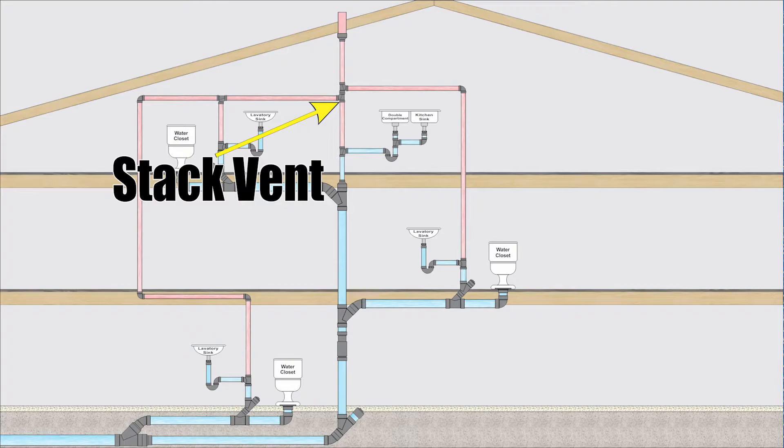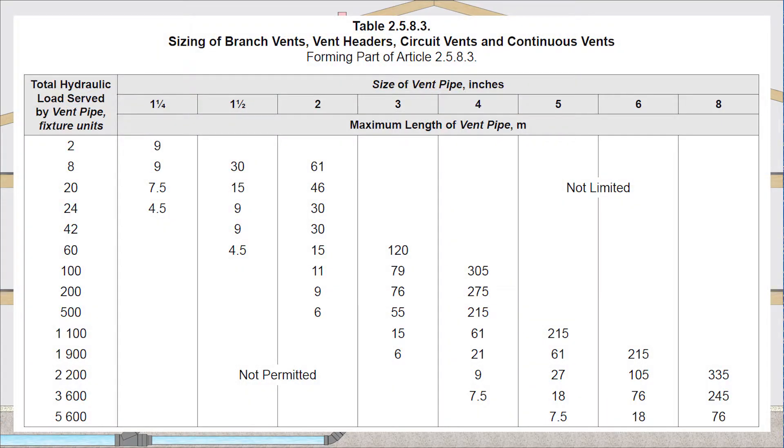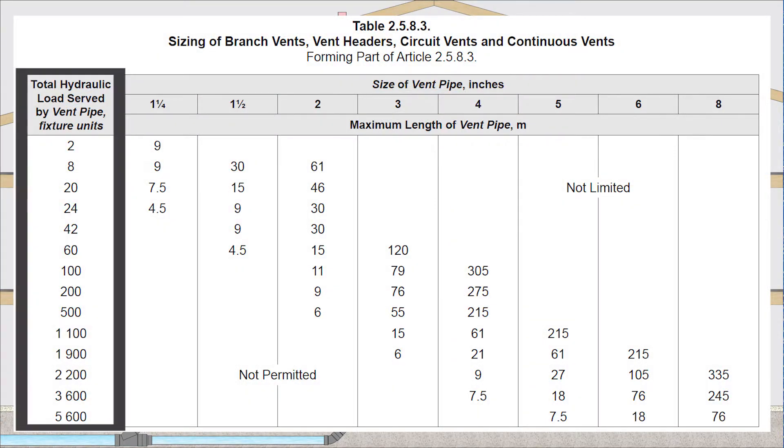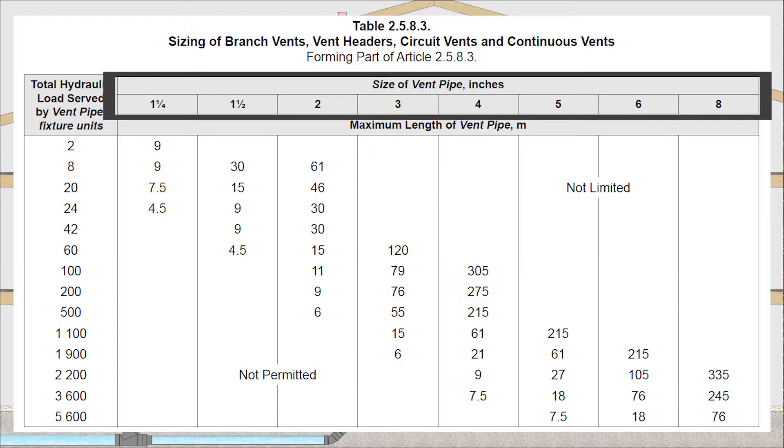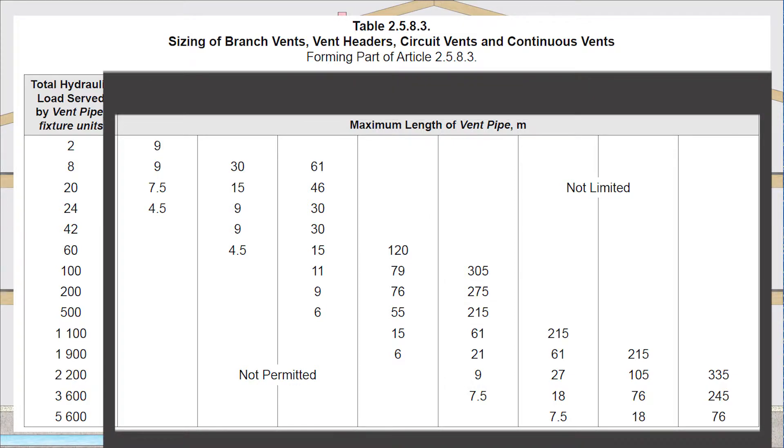Now when we talk about sizing a branch vent, the code does not tell us very much. So we have to find the table that's for it, which is table 2.5.8.3. On the left hand side, we have the total hydraulic loads served by the vent pipe in fixture units. Over on the top, we have the size of vent pipe in inches. And in the main body, we have maximum length of vent pipe in meters.